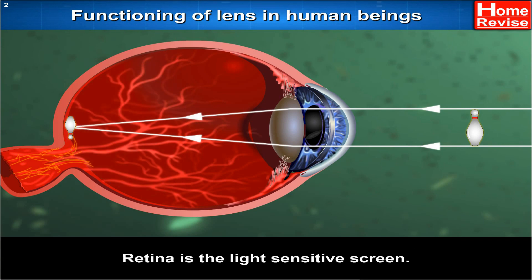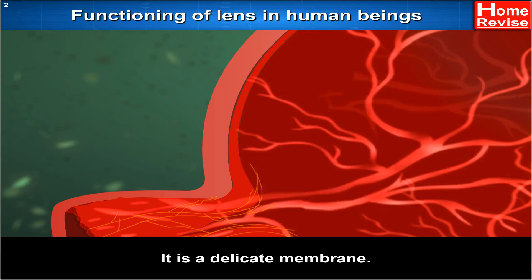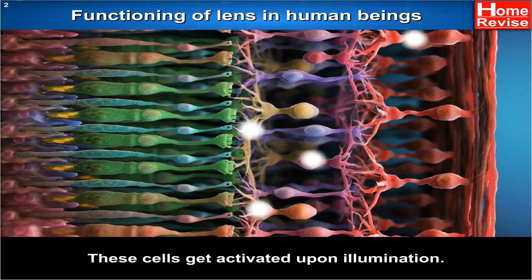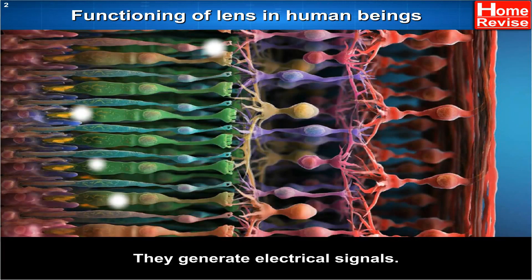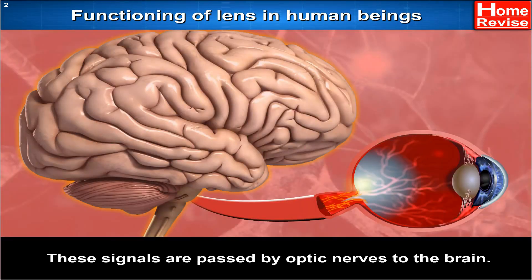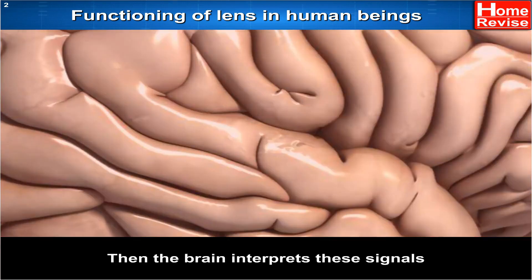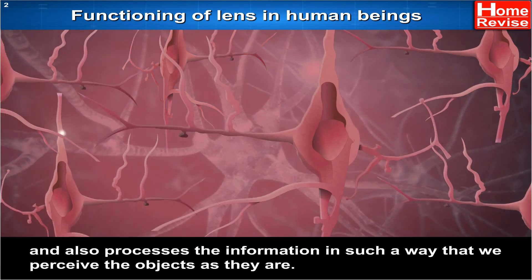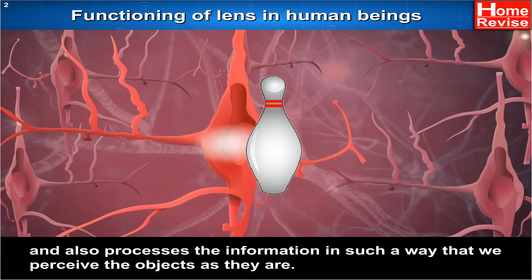The retina is the light-sensitive screen. It is a delicate membrane consisting of a large number of light-sensitive cells. These cells get activated upon illumination and generate electrical signals. These signals are passed by the optic nerves to the brain. Then the brain interprets these signals and processes the information in such a way that we perceive the objects as they are.